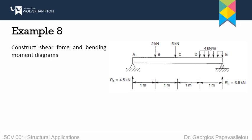Here we have a more complex example than the previous ones we have solved, but of course the process is exactly the same. The first step, as always, is to draw the free body diagram, and to do so I have to substitute the supports with the reactions. Here you can see the results, but of course we will be calculating them ourselves.